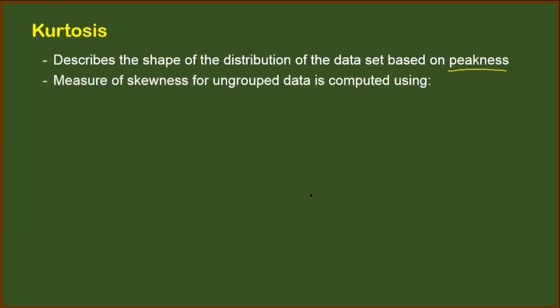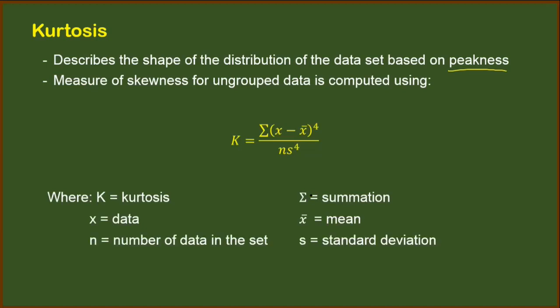The measure of skewness for ungrouped data is solved using this formula. So we have the summation of the score minus mean raised to the fourth power divided by the number of data set times the fourth power of the standard deviation. To better understand how this works, later we will have an example for us to be familiar with this formula.